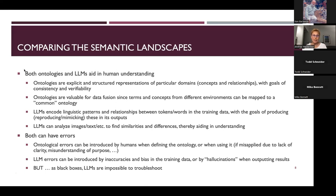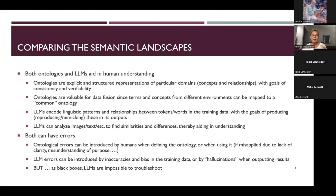Ontologies are explicit, structured, with goals of consistency and verifiability — very valuable for data fusion because you can map to a common ontology. LLMs are about linguistic patterns and relationships of words. One document described the LLM as mimicking what's in the training data — reproducing patterns without really understanding. It can help a person understand, but only if the person validates what's actually true versus what the LLM said as a next token in its linguistic pattern generation.